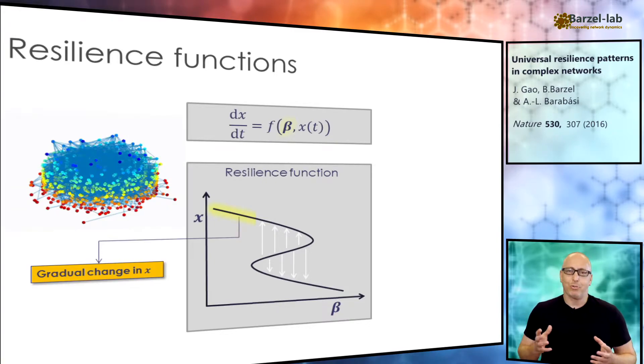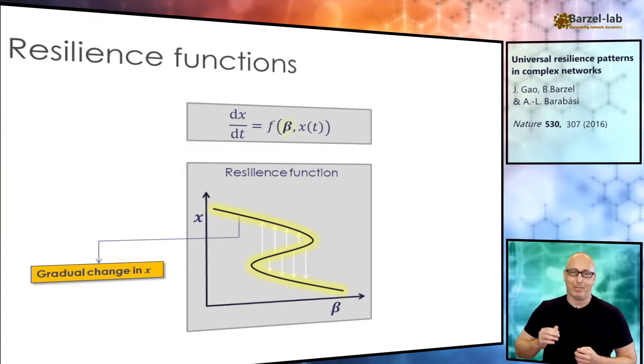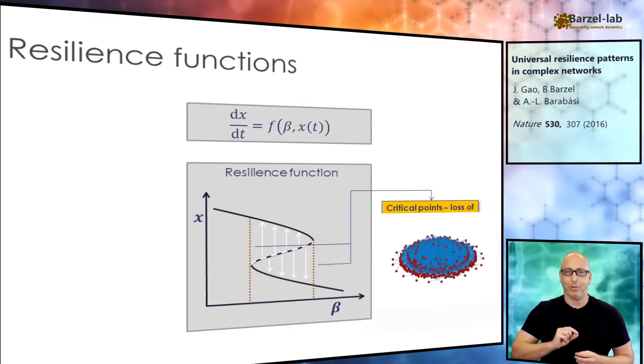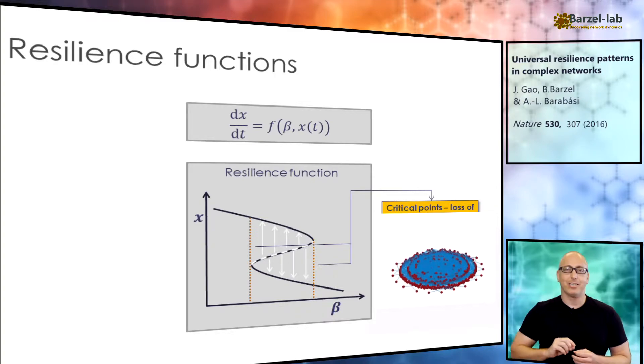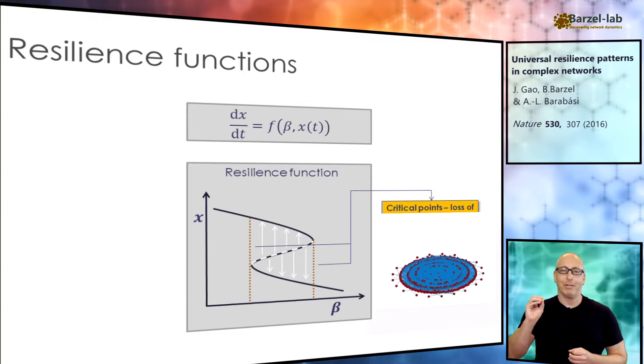Sometimes the change is gradual. But if you stretch beta too much, you observe a dramatic collapse. It is these critical points, where the system suddenly changes its behavior, that we want to be able to predict.